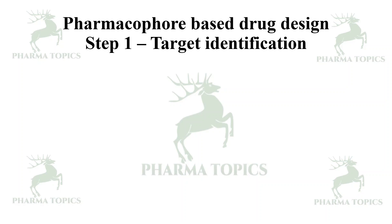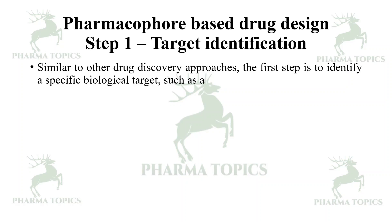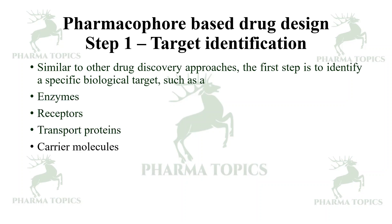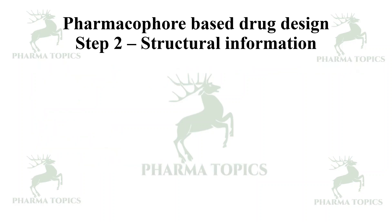Step one in pharmacophore based drug design is target identification. Similar to other drug discovery approaches, the first step is to identify a specific biological target such as enzymes, receptors, transport proteins, carrier molecules, or any other targets that play a crucial role in the disease process.